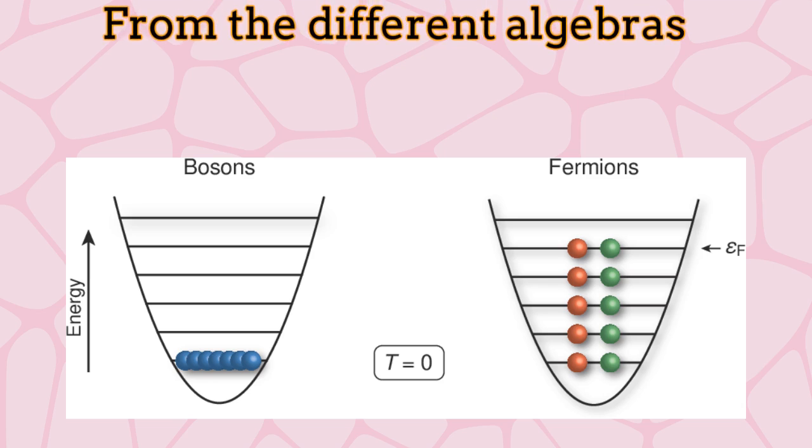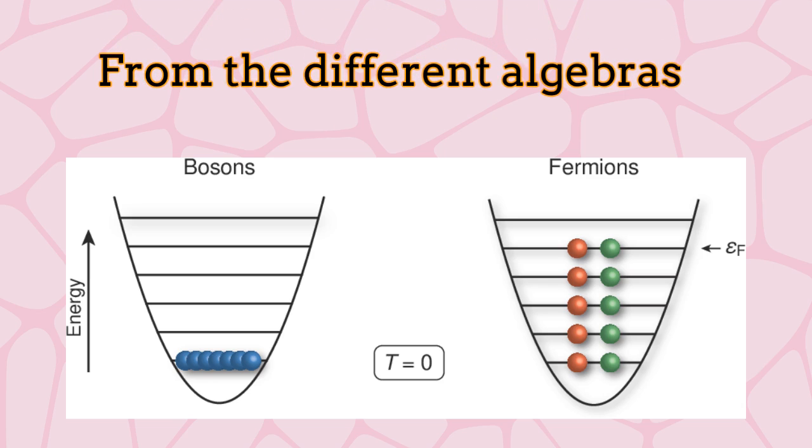Due to the different algebras obeyed by quantum fields, it is very easy to demonstrate that different bosons can coexist in the same quantum state. On the other hand, it is also possible to demonstrate that different fermions cannot coexist in the same quantum state.